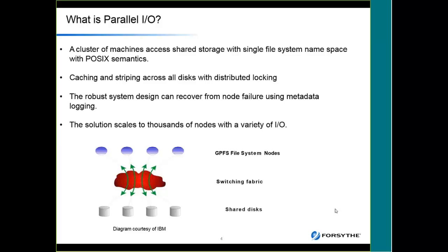The idea is that you have a system that's very robust. If you lose a node you don't lose the system. In the three-node system we put together, we built in redundancy for the disk subsystem so that if you lost one disk subsystem you can still function. It can scale to thousands of nodes with different I/O options — nodes can be direct fiber connected or network connected.